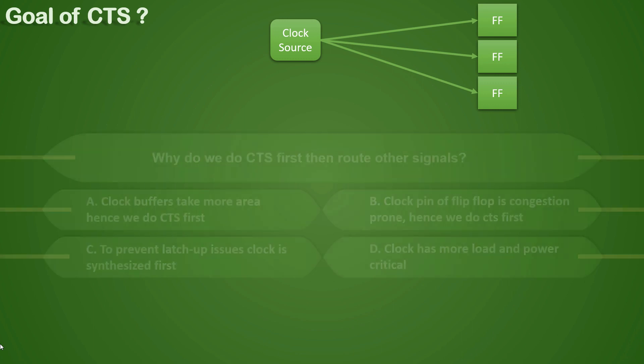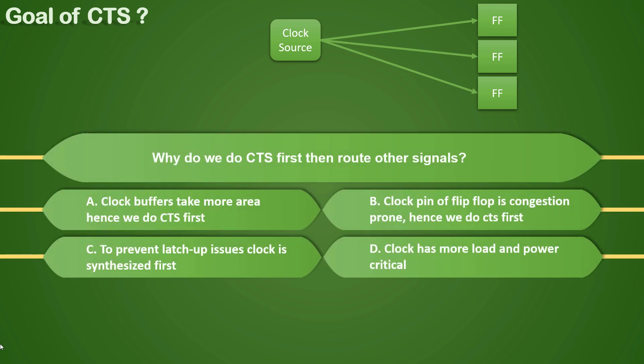A very commonly asked interview question is: what are we trying to achieve by doing CTS first and then routing the other signals? Why do we do that? If you see the options: A, clock buffers take more area so we do CTS first, or B, clock pin of flip-flop is congestion prone.